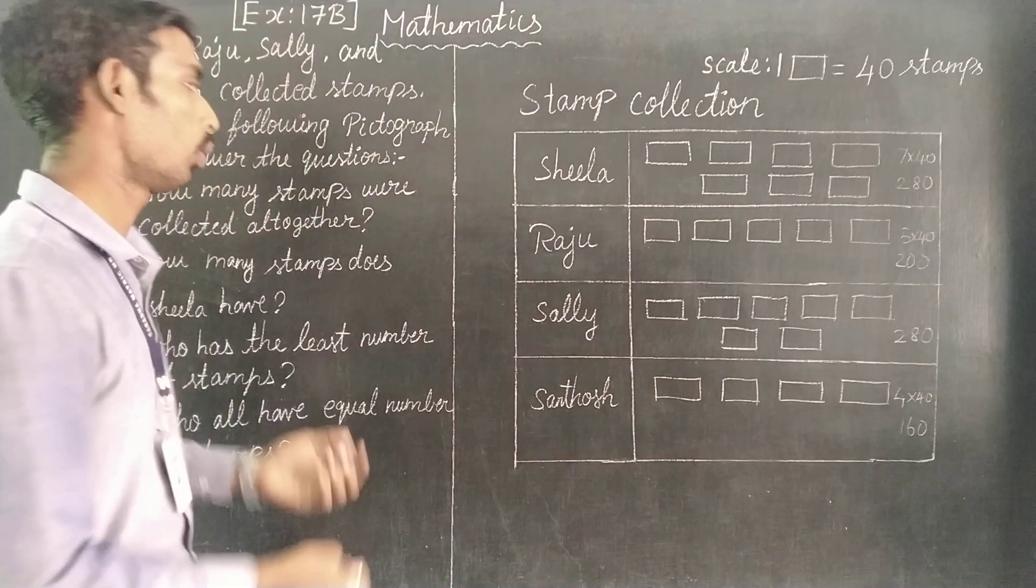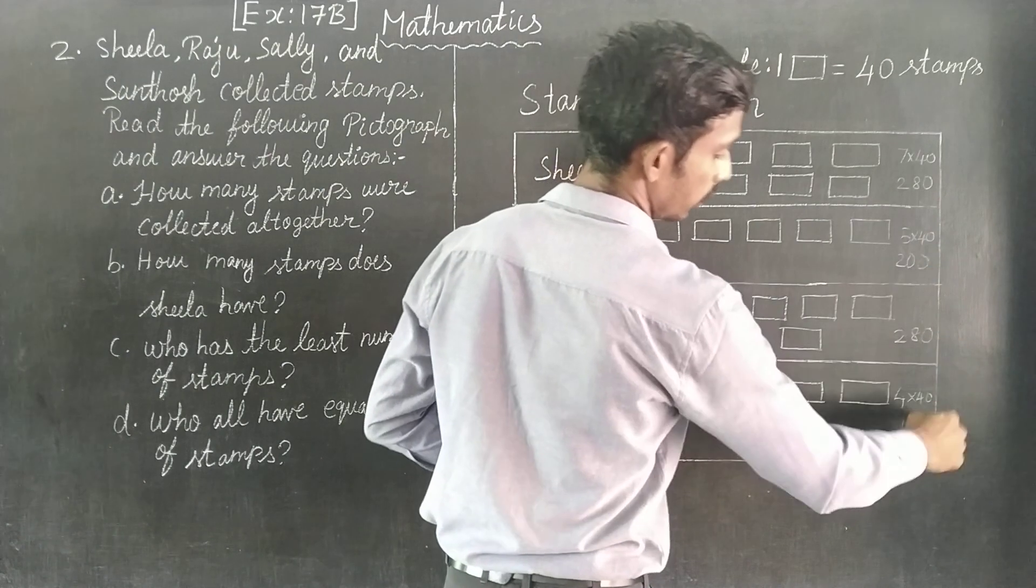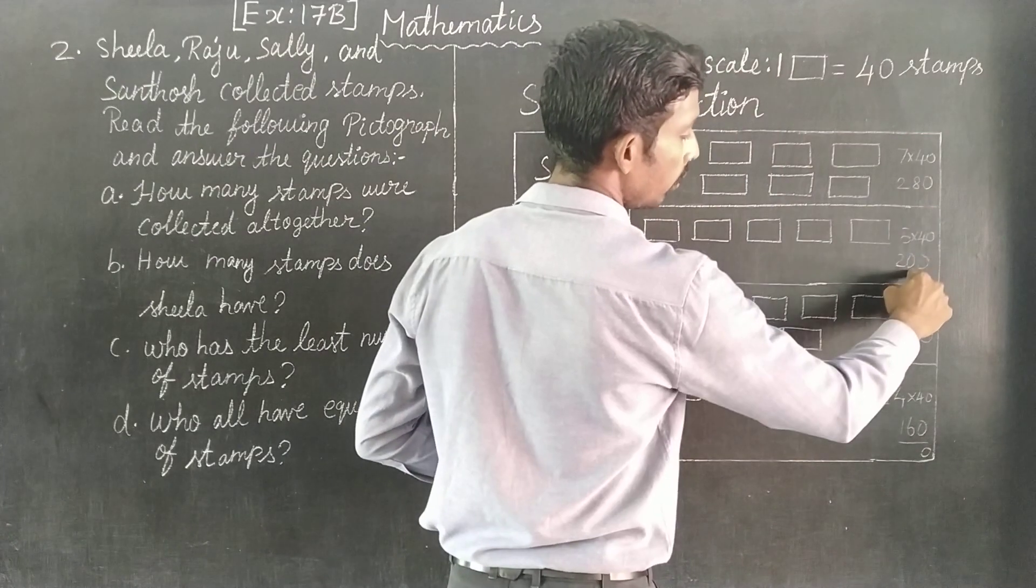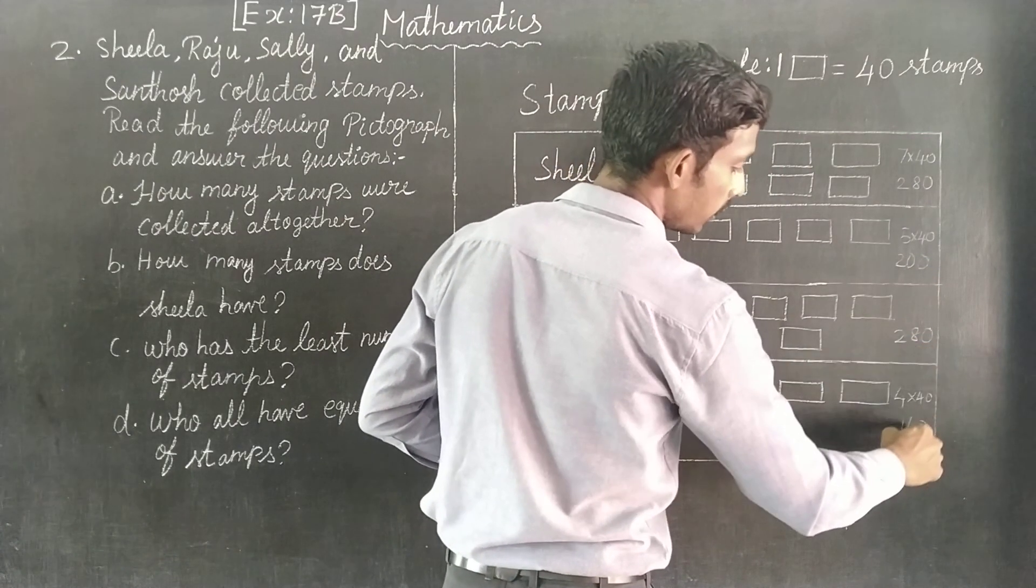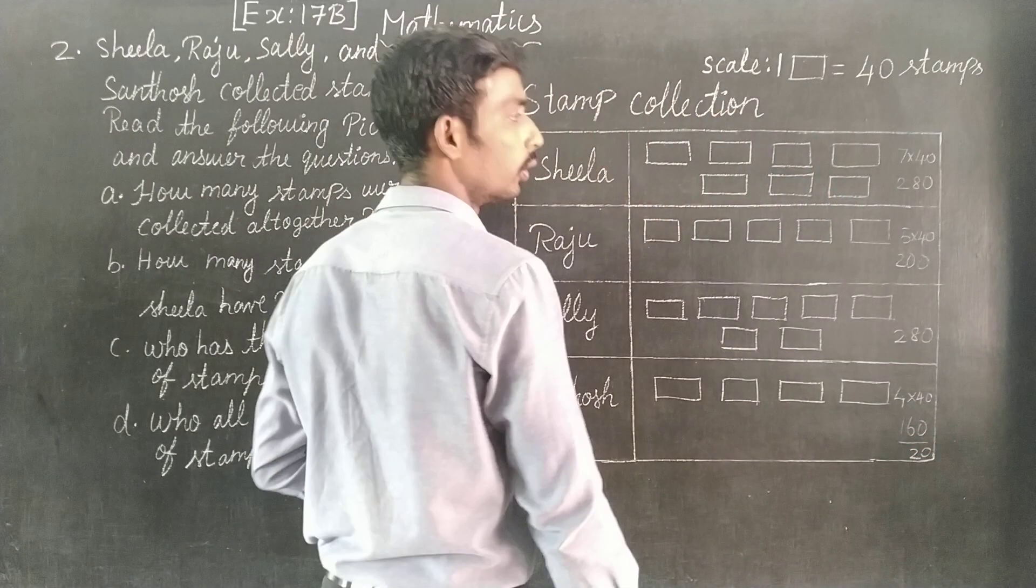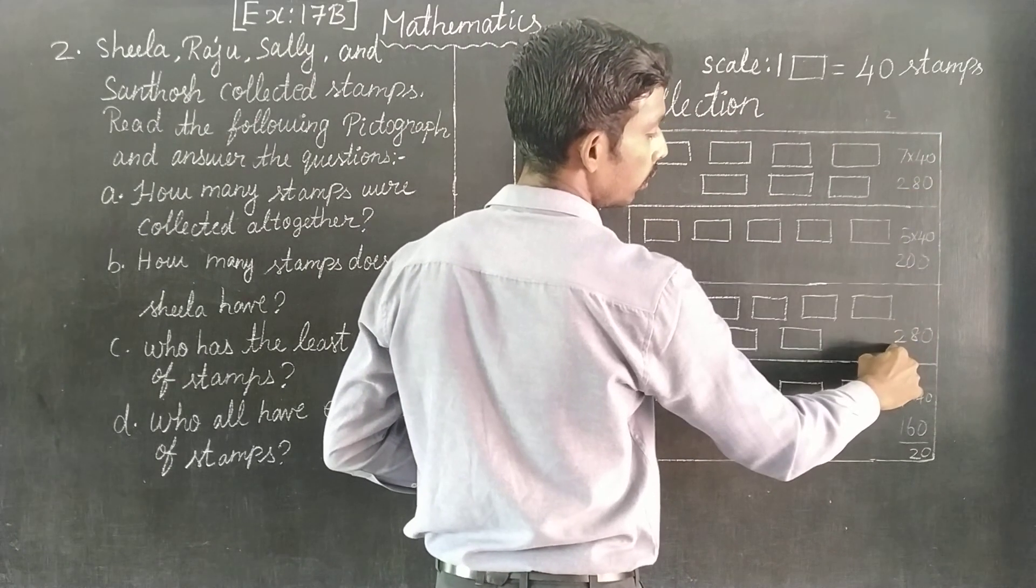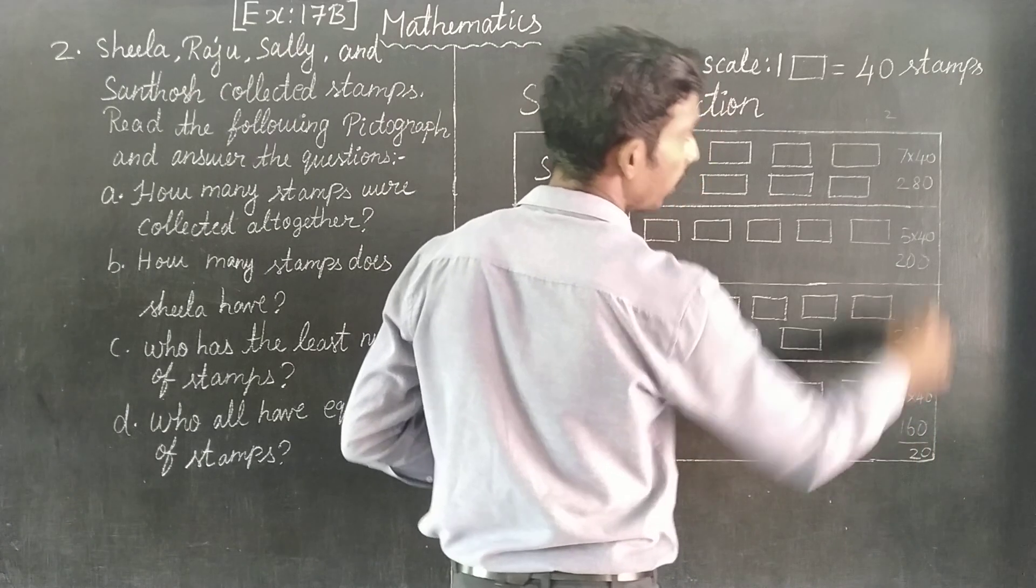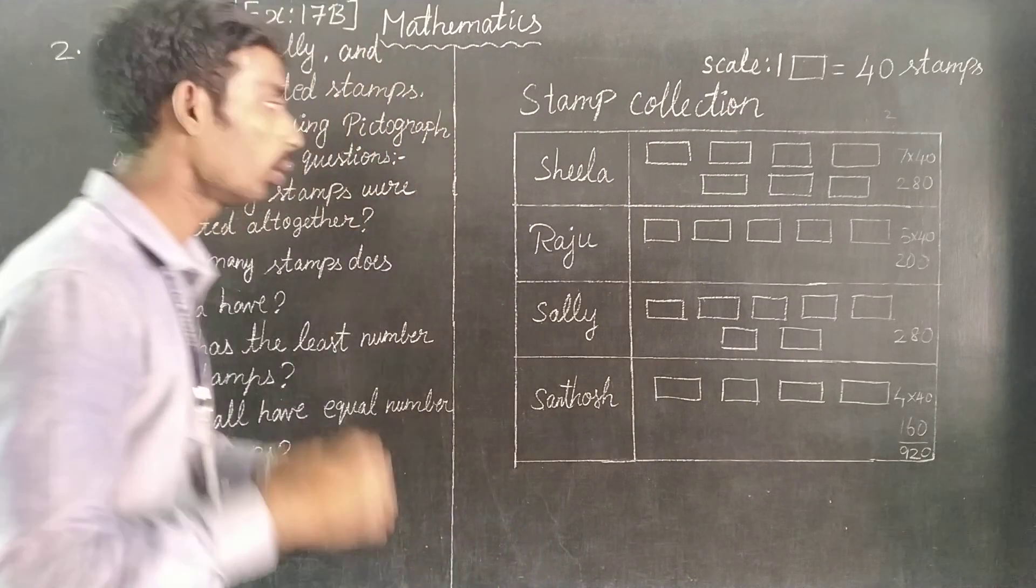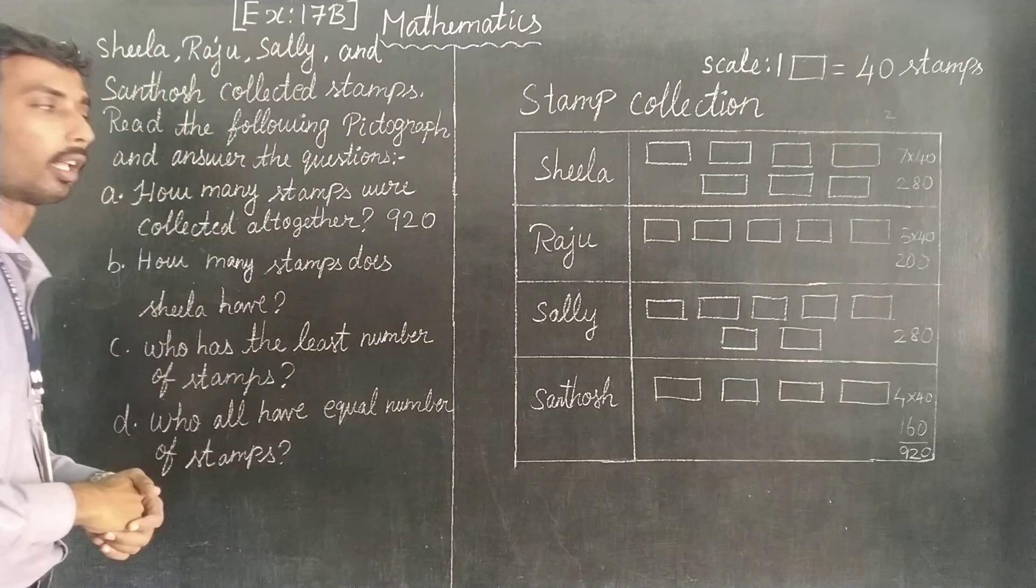So the total is 280 plus 200 plus 280 plus 160. Eight plus sixteen, twenty, twenty-four, six, seven, nine...920 total stamps.